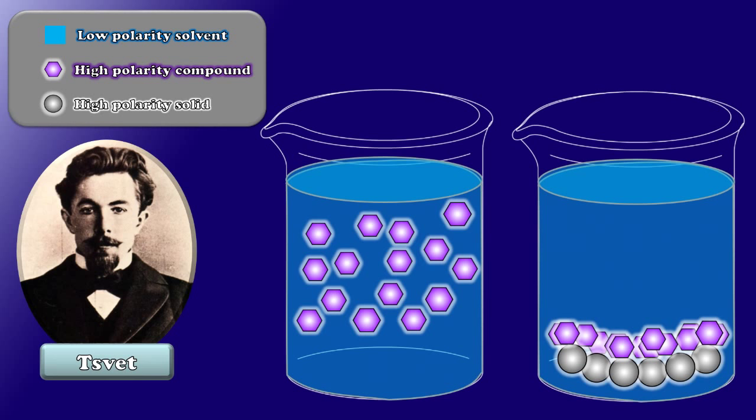He could affect the solubility of compounds simply by adding an insoluble material to the solution. This was a very curious observation. And it may not seem obvious now, but in just a moment I'm going to explain to you how Svet turned this into the most powerful separation technique that chemists have in their entire arsenal.